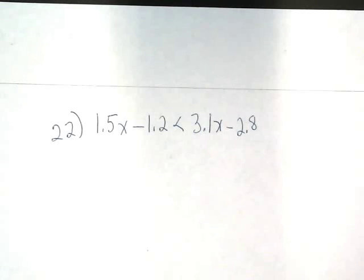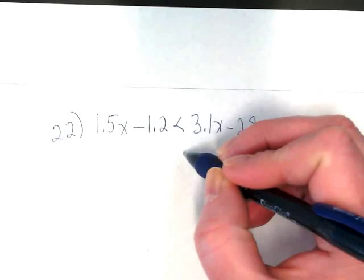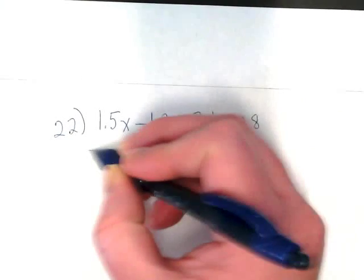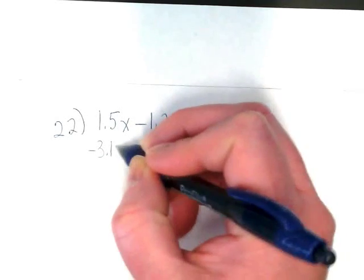Nothing has to be simplified here, there's no distributive property or anything like that. I just need to combine like terms to both sides of the inequality. I'm going to do them both at the same time. I'm going to move this to the left because we want our variable to end up on the left.